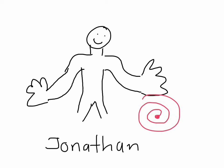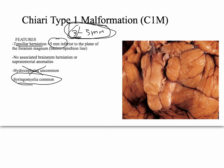Here's a picture of my roommate Jonathan — he has syringomyelia. All along his arm, up around his chest and around his back, he will not sense pain. So he can touch a hot plate and think it's okay. In review: you have tonsillar herniation, syringomyelia, no hydrocephalus, no brainstem herniation. This is Chiari 1 malformation.